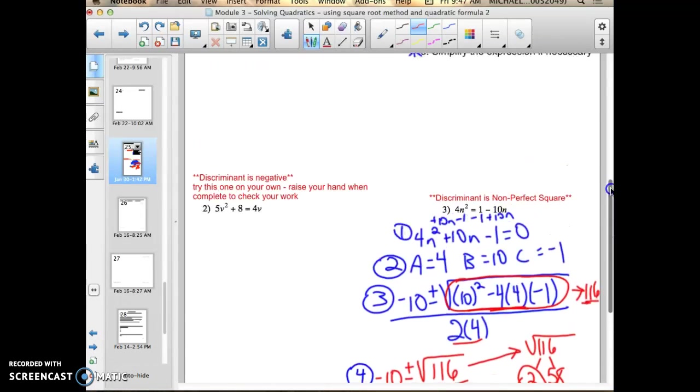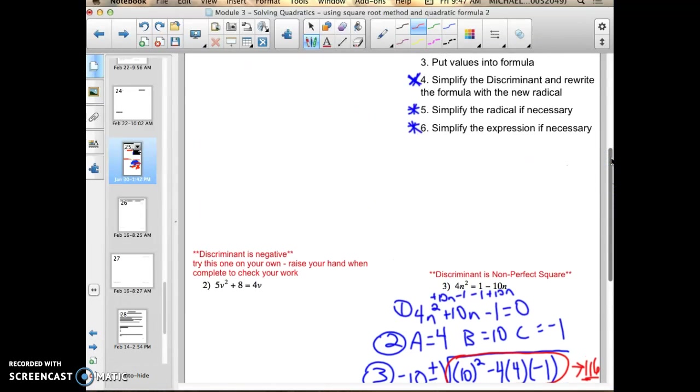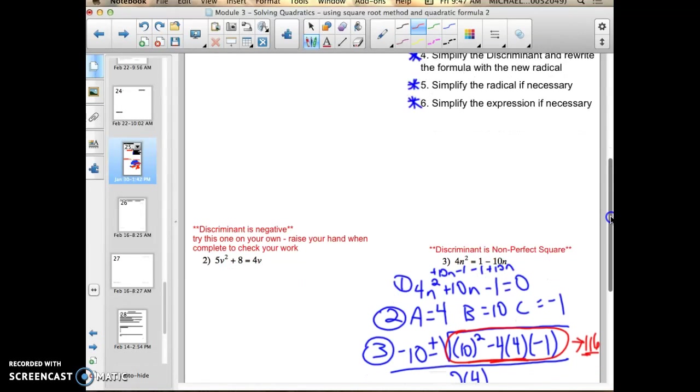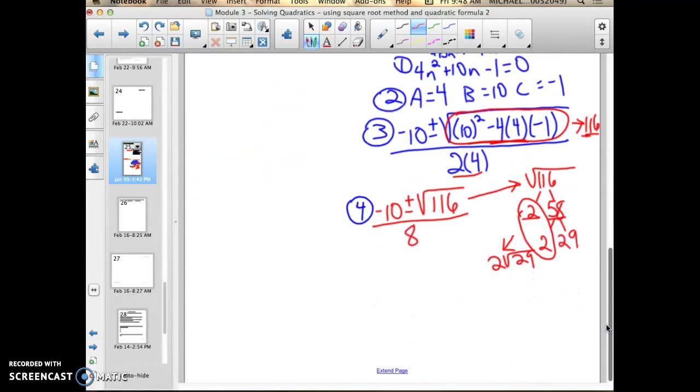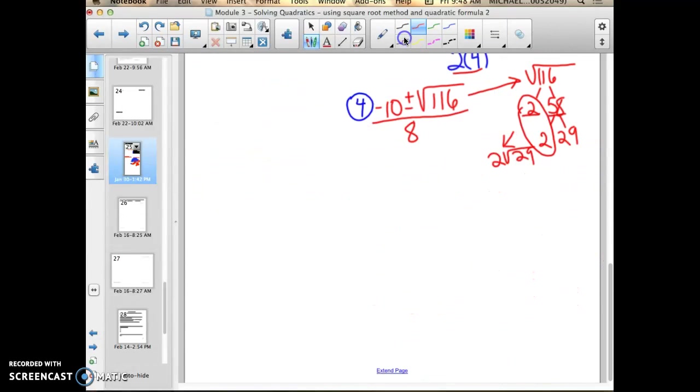So I have just completed step 5. Step 4 was simplify the discriminant and rewrite the formula with the new radical. Step 5 was simplify the radical if necessary. I just simplified it. So now I am going to rewrite my new quadratic formula with my new simplified radical. Negative 10 plus or minus 2 times the radical of 29 all over 8.